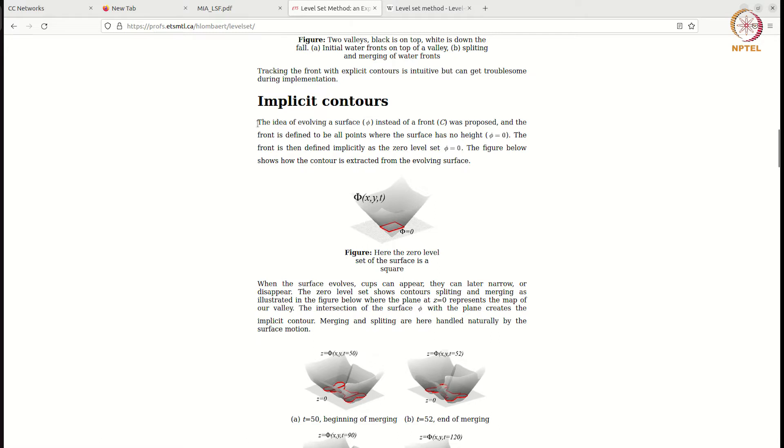As you can read here, the idea of evolving a surface instead of front C was proposed, and the front is defined to be all points where the surface has no height. Phi you can also think of as a height function that we're going to evolve. This is the main difference between the two.